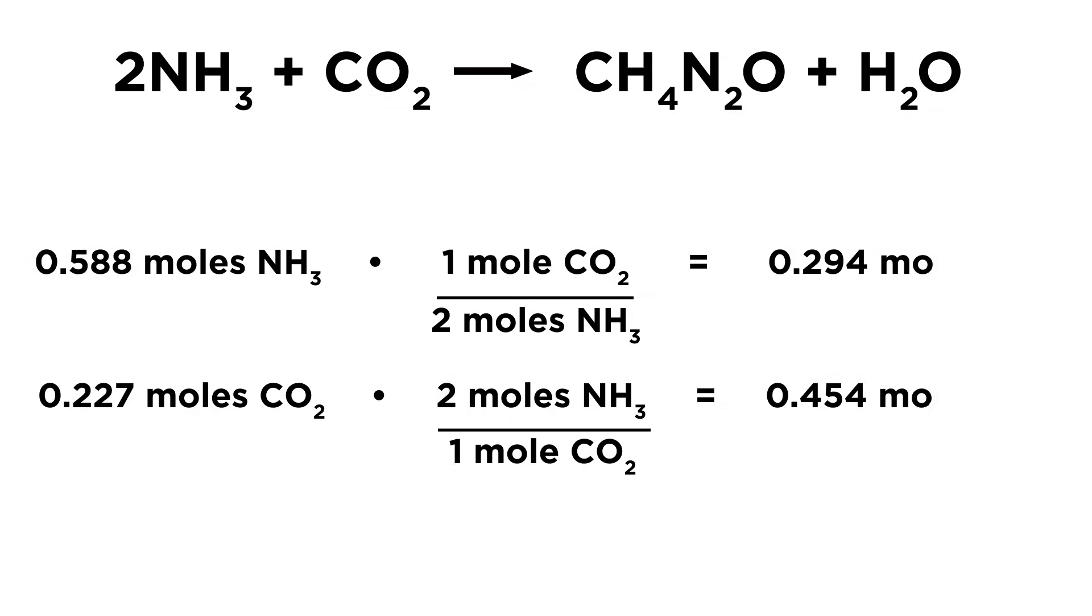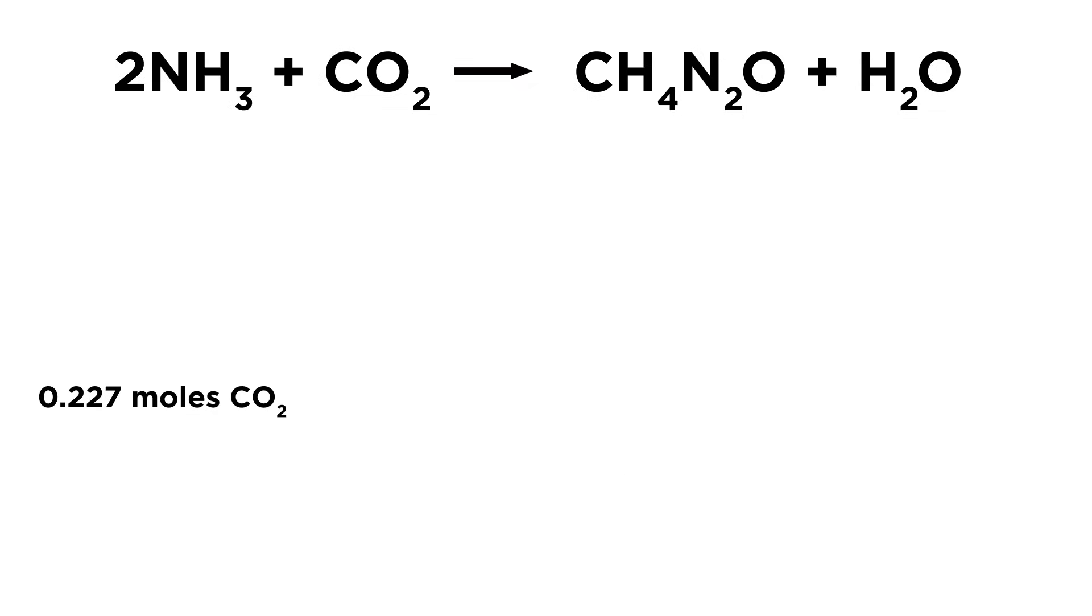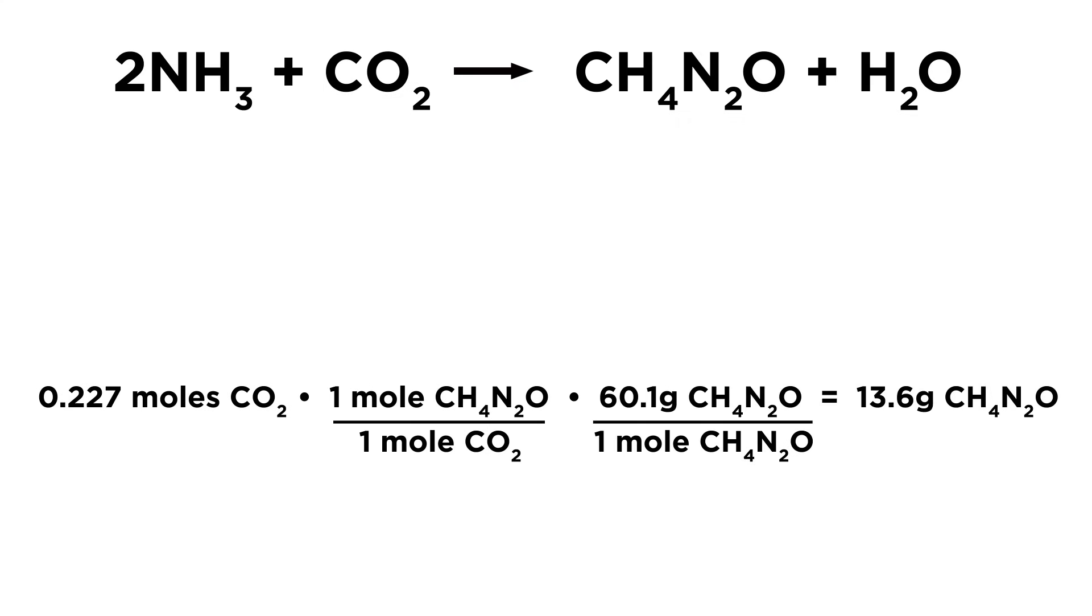Once we identify the limiting reagent, we just use the data for that substance to calculate how much product we will get, since that substance will get used up. If we used the other one, we would get the wrong answer because not all of the reagent in excess will go towards generating product.